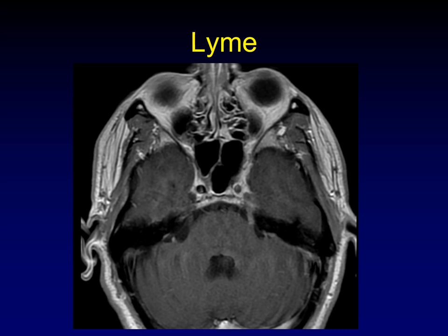Lyme disease is famous for causing enhancement along cranial nerves. Here's the trunk of the fifth cranial nerve — this trigeminal enhancement looks just like perineural spread. Could this be a malignancy that's spread to the Gasserian ganglion coming back from Meckel's cave? Yes, it would look just like that traveling back towards the brain stem, but this is a CNS infection that classically causes nerves to enhance.